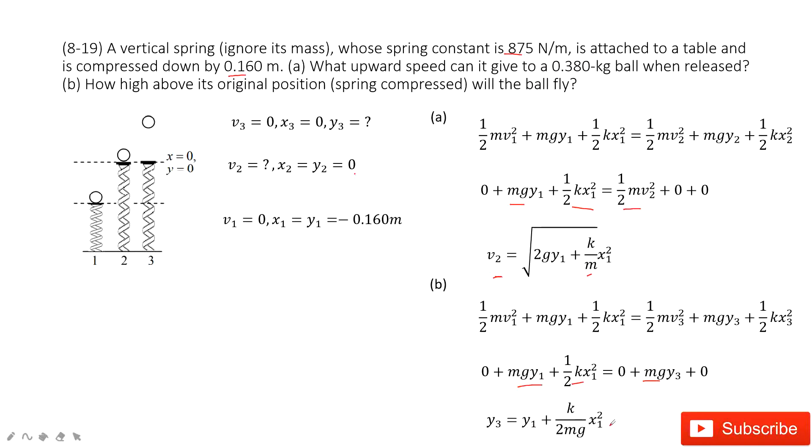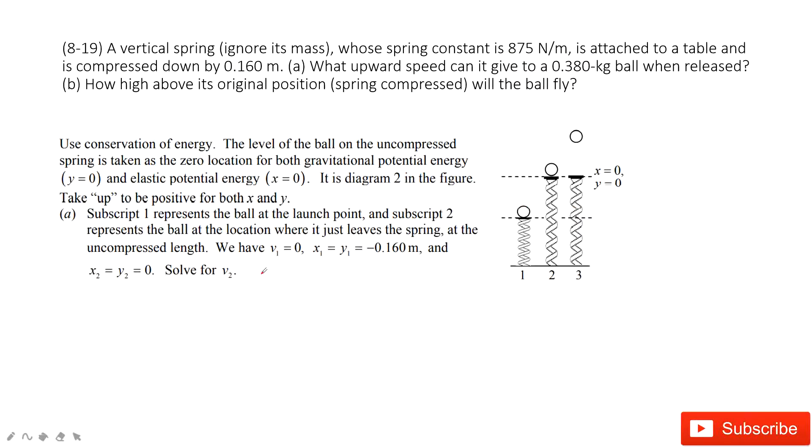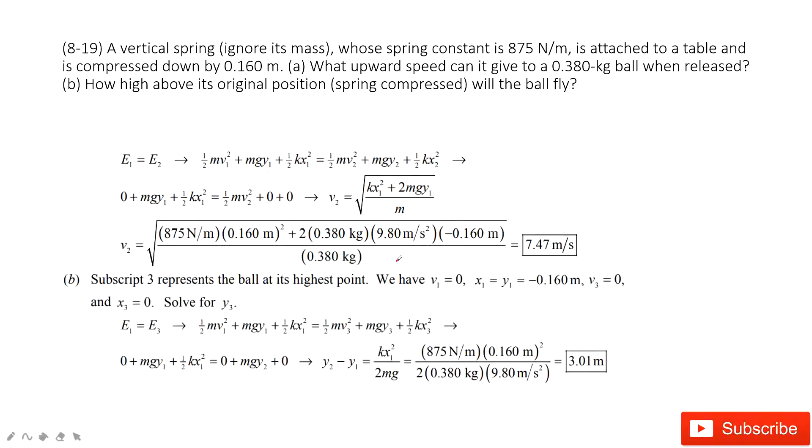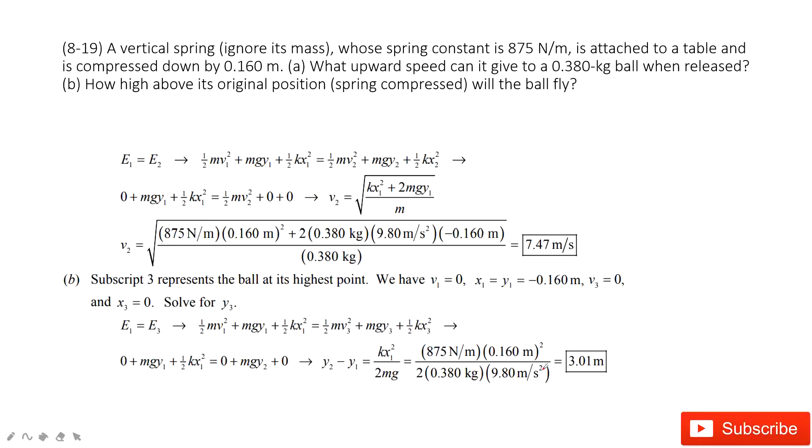In y3, you can see y1 is given, x1 is given, k is given, mass is given, g is the constant. So then you can input the known quantities. And to solve the problems, first one v2 is 7.47 m per second. The second time, we can find the y3 is just 3.01 m. Thank you.